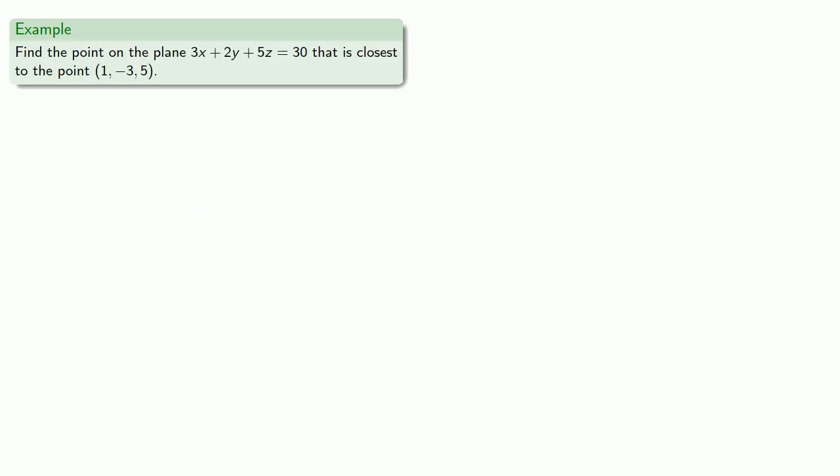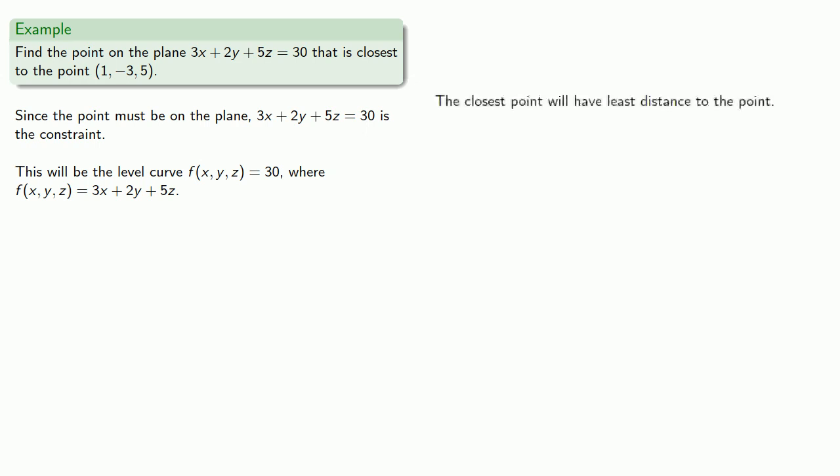So for example, let's find the point on the plane that is closest to the point (1, -3, 5). Since the point must be on the plane, the equation of the plane is the constraint. And this will be the level curve f(x,y,z) equals 30, where f(x,y,z) is the variable portion of our equation. Now the closest point will have the least distance to the point (1, -3, 5). And so we can find the distance to the point using our distance formula.